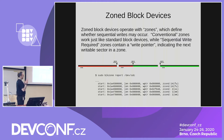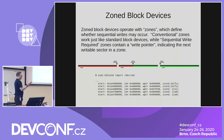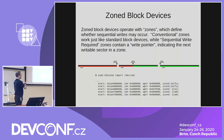Zone block devices operate within zones of the device which define whether sequential writes may occur. Usually for a zone block device they'll have a good portion — about 99% — of sequential write only zones for the medium. Conventional zones work just like regular block devices. Sequential write required zones have a write pointer which indicates the next writeable sector in a zone.